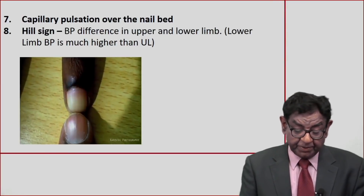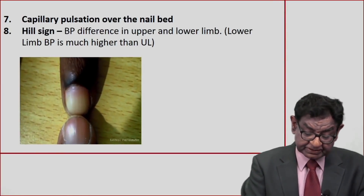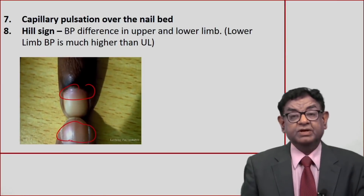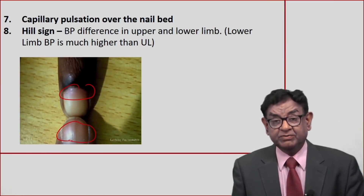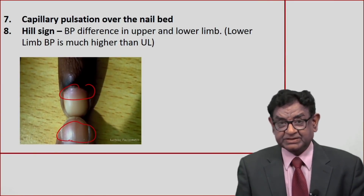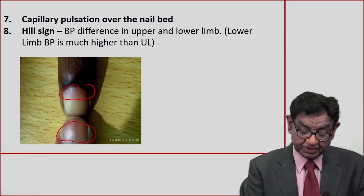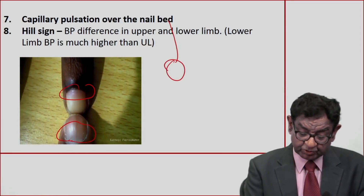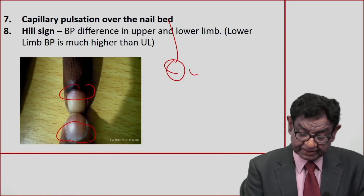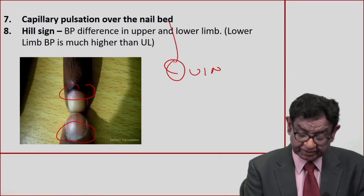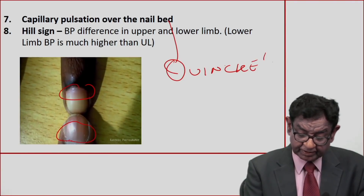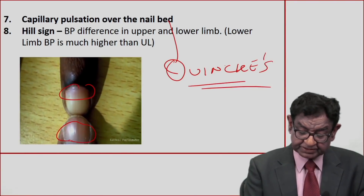Now, capillary pulsation over the nail bed — you can see it here. Tell me: what is the name of this sign? Write down the answer. The name of this sign is Quincke's sign.